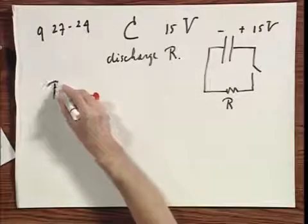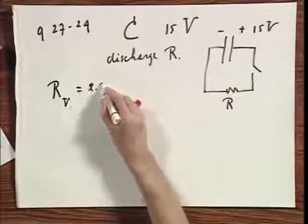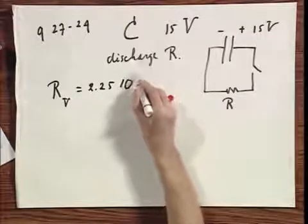Now this R is part of a voltmeter, I shall call it ROV, and that is 2.25 times 10 to the 6 ohms.